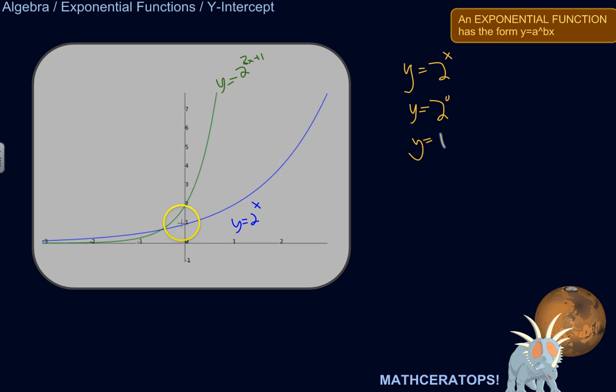So the y-intercept of this exponential function is y equals 1, which is right there. You can see visually that this is true.